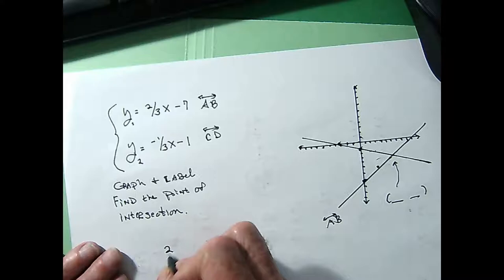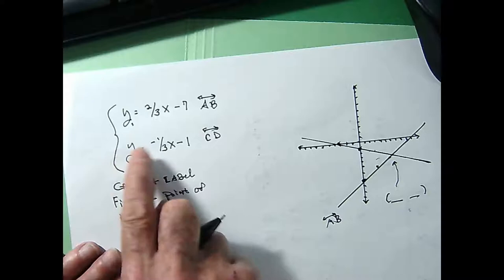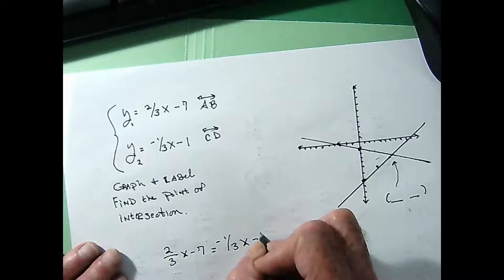That would be 2/3x - 7 equals whatever y equals here, which is -1/3x - 1.